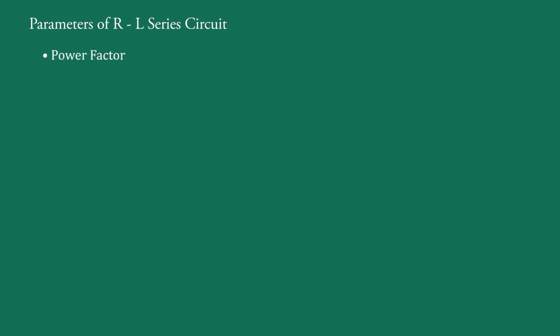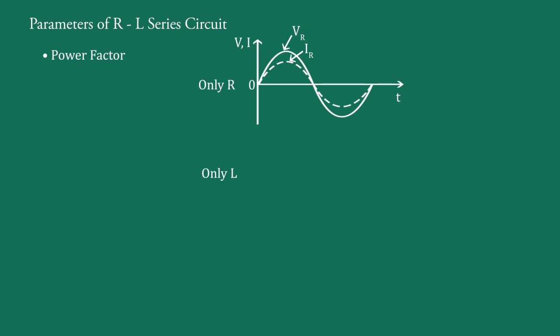Now, we will find power factor cos theta. If an alternating sinusoidal voltage is applied across a pure resistor, the voltage and current are in phase with each other, like this. If an alternating sinusoidal voltage is applied across a pure inductor, the voltage leads the current by 90 degrees, like this.